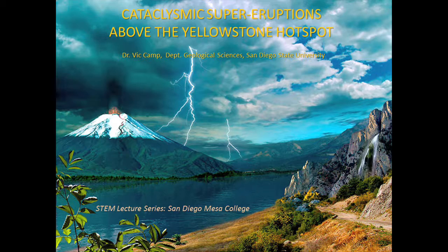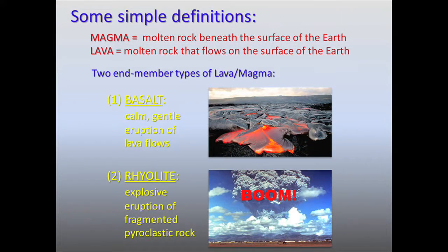Before I do that, I want to talk about a few fundamental concepts just to set the stage, beginning with a couple of simple definitions. When we use the term magma as opposed to lava, both refer to molten rock. Magma, however, exists only beneath the surface of the Earth, and when it erupts, it erupts as lava. There's actually a compositional difference as well, because when it erupts as lava, it actually degases — it loses a lot of gas that actually drives the eruption itself.